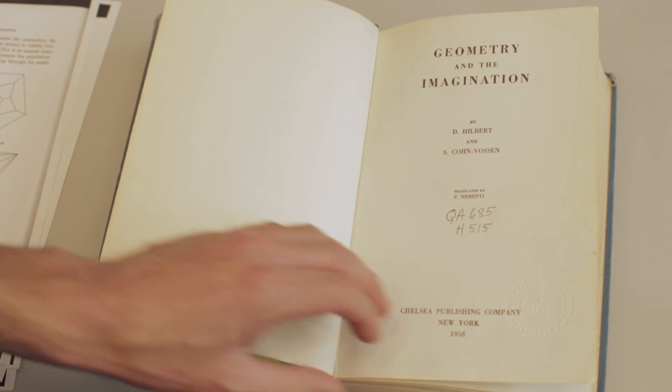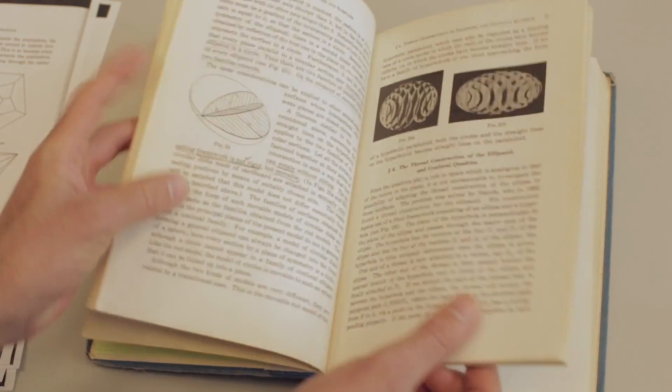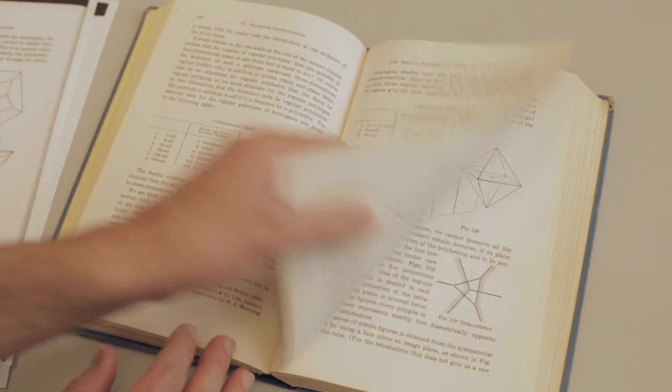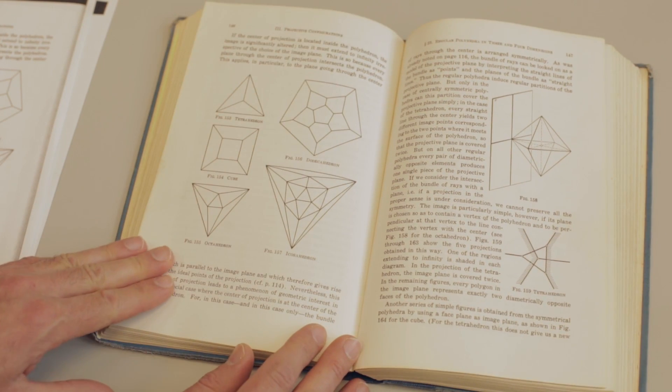When I was about 10, 11 years old, I was reading a book by Hilbert and Cohn-Vossen, an old-fashioned book. It is written as a story, very intuitively written, with many pictures and many explanations.